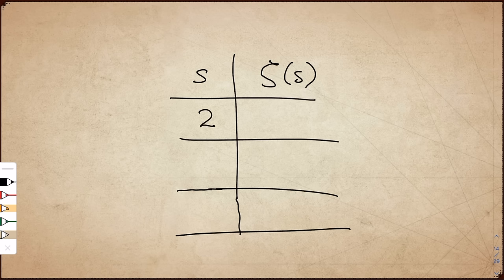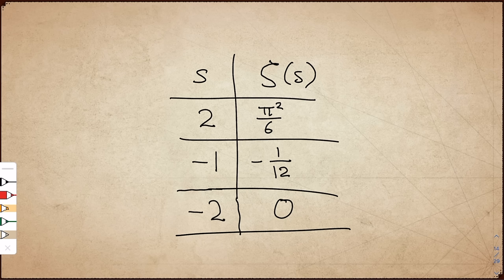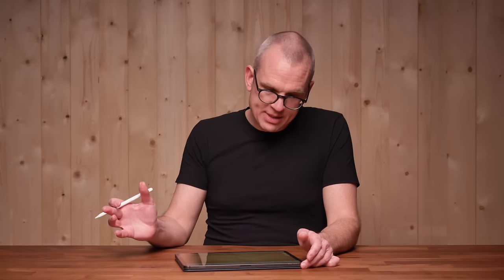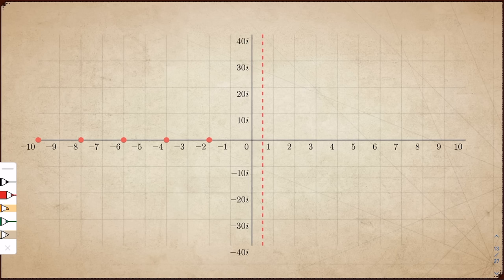This is where the Riemann zeta function enters the story. The prime numbers are connected to the zeros of the Riemann zeta function. The zeta function is a function from complex numbers to complex numbers — for any complex number you give as input, you get a complex number as output. For example, input 2 gives output pi squared over 6. Input minus 1 gives output minus 1 over 12. And input minus 2 gives output 0, so minus 2 is a zero of the Riemann zeta function. Some zeros are quite easy to compute: minus 2, minus 4, minus 6, and so on — the negative even numbers. These are called the trivial zeros.